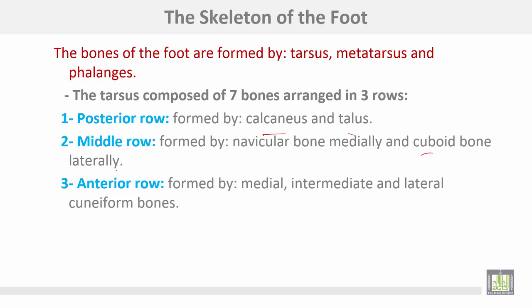The tarsus is composed of seven bones arranged in three rows. The posterior row is formed by the calcaneus and talus. The middle row is formed by the navicular bone medially and the cuboid bone laterally. The anterior row is formed by the medial, intermediate, and lateral cuneiform bones.